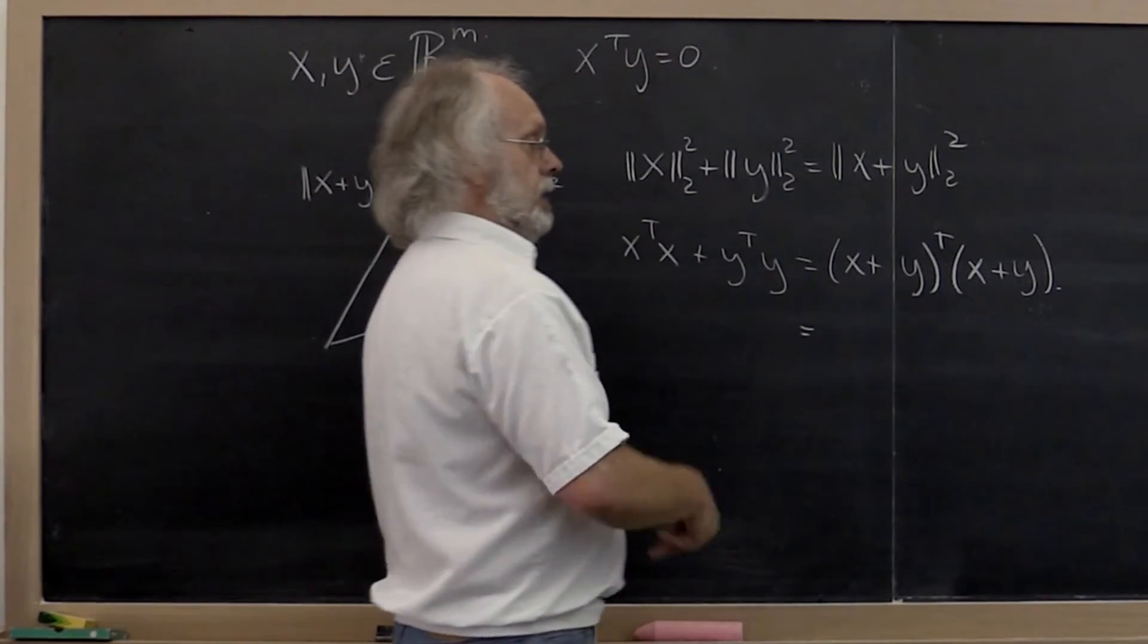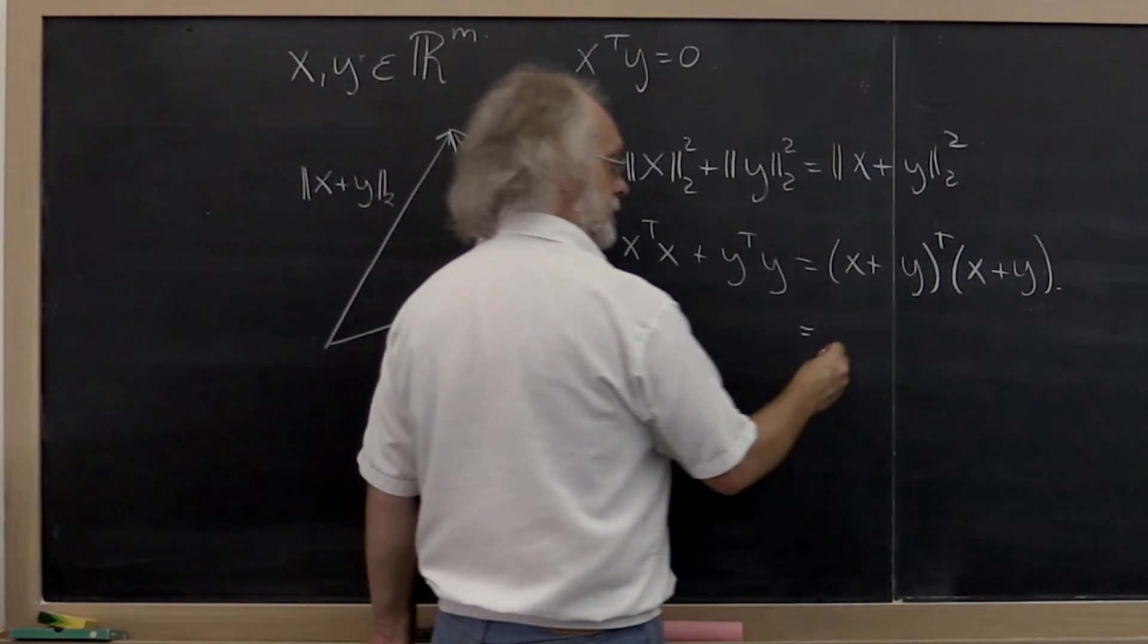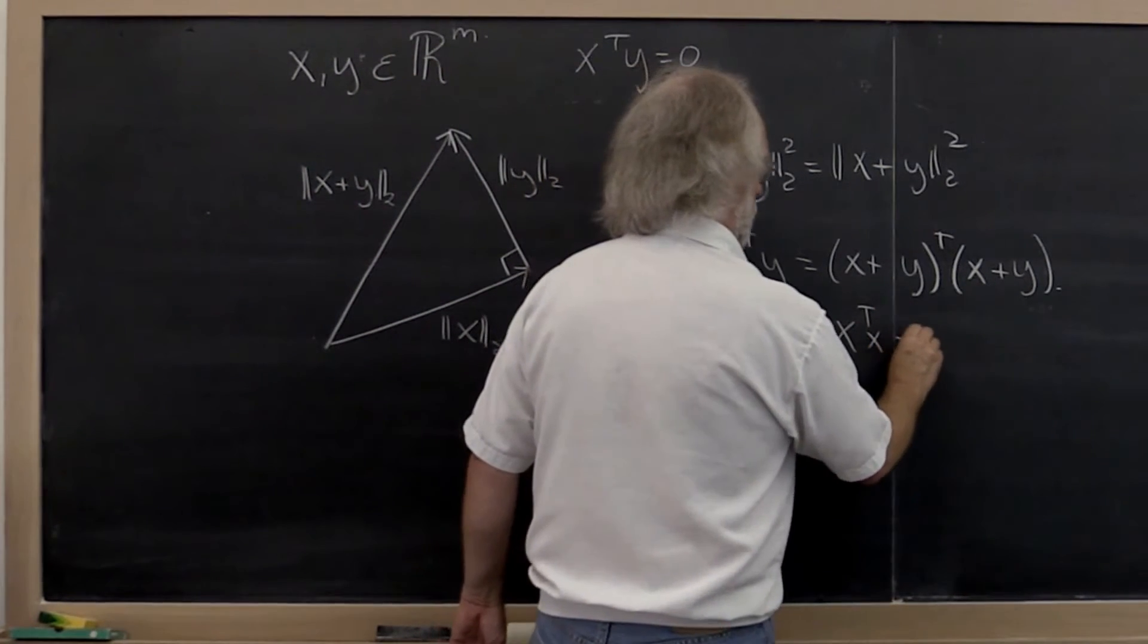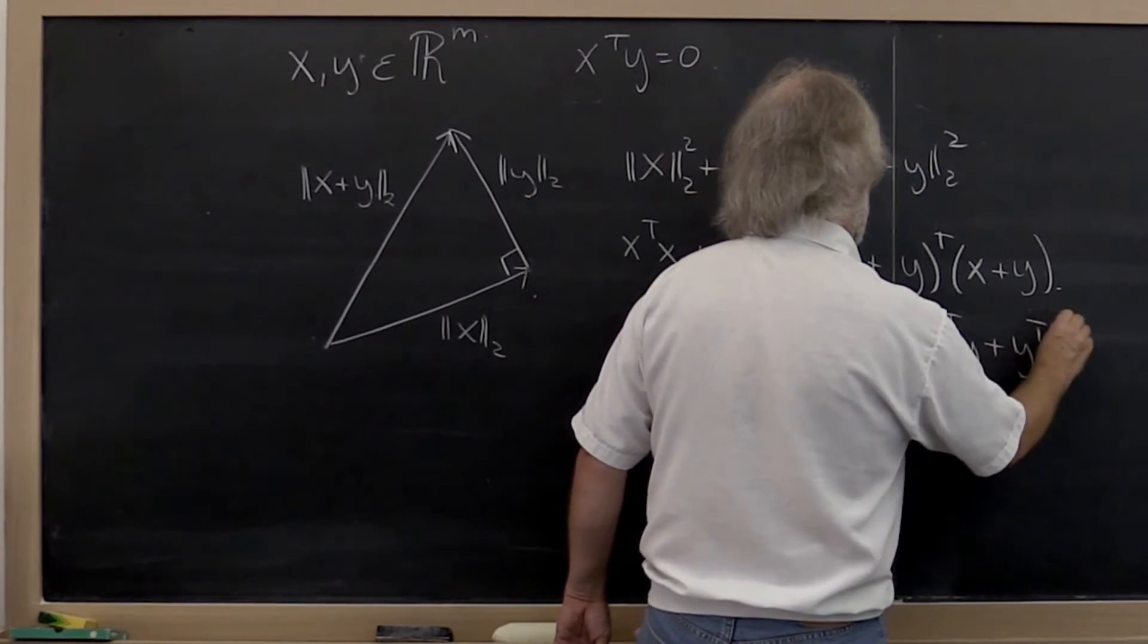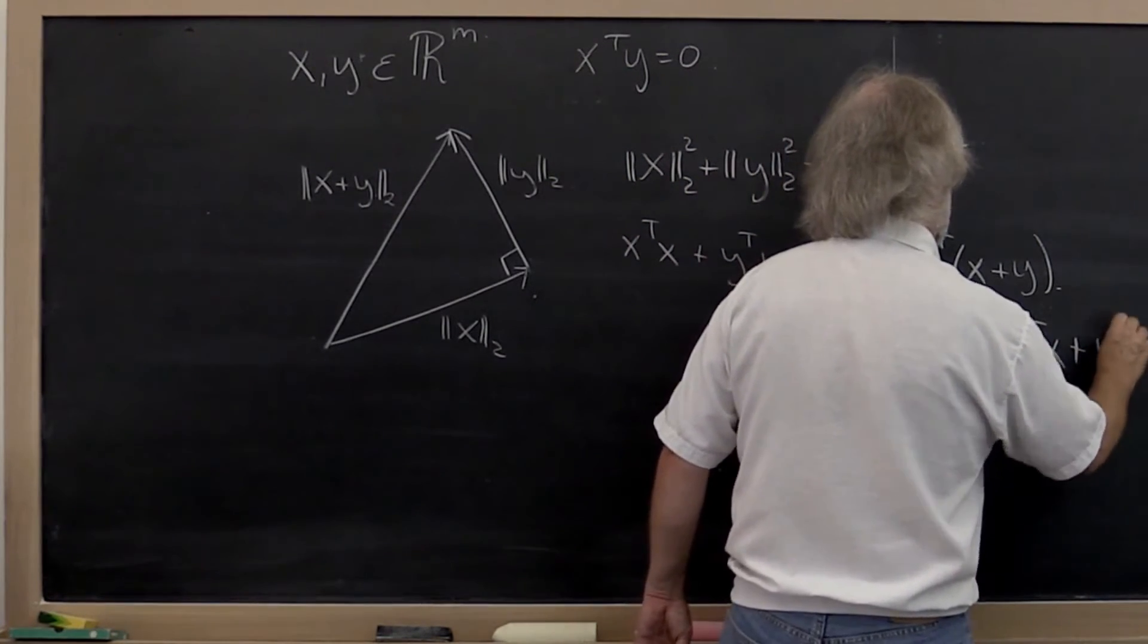Which, if we multiply it out, gives us x transpose x plus x transpose y plus y transpose x plus y transpose y.